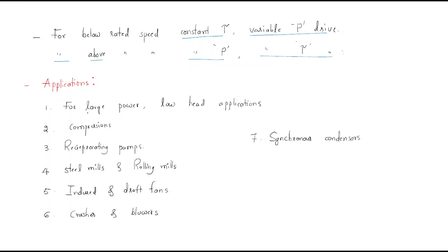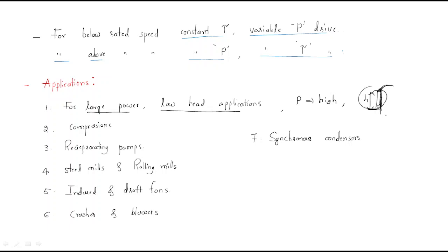The first application is for large power and low head applications. Large power means the power value is high, and low head applications means it has very less head — less height — such as when acting as a motor driven by water. The second application is in compressors, where it is also very useful.